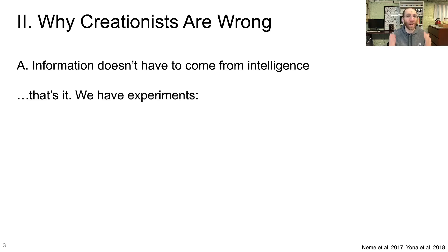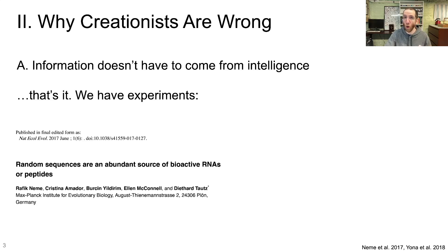That's the counter-argument. We have direct experiments that show you can generate functional biological information from non-directed processes, which is to say, without an intelligent source. I have two papers to show you that back up this claim. The first is Nimi et al. from 2017. Random sequences are an abundant source of bioactive RNAs or peptides. In this experiment, they generated random RNA or polypeptide sequences and found that a whole bunch of those randomly generated sequences will have some biochemical activity, which is to say, they will contain biological information.